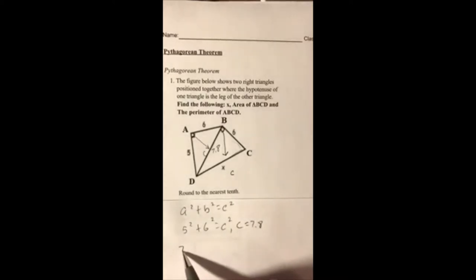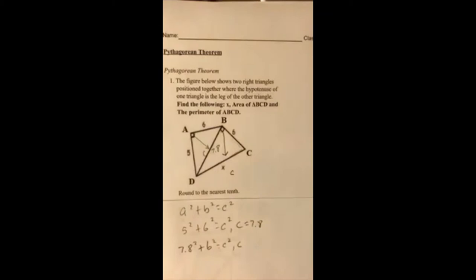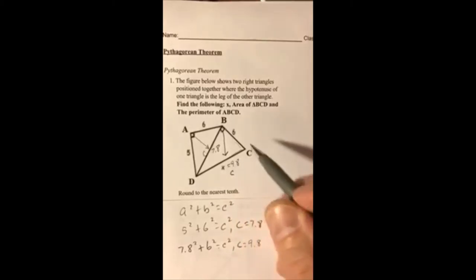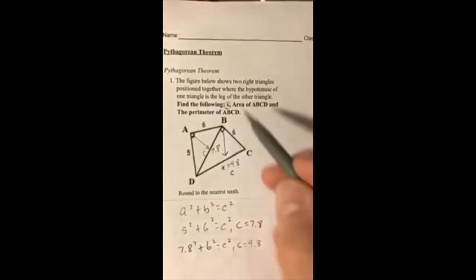So I'm going to do it again: 7.8² + 6² = c², c. That gives us 9.8. That'll go here, 9.8. Now we found X. That's the first thing we want to find, X = 9.8.